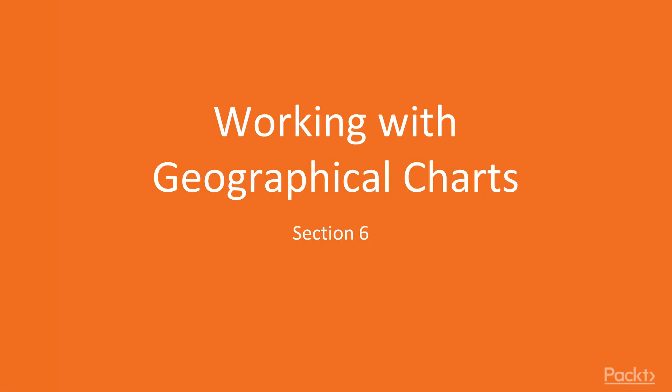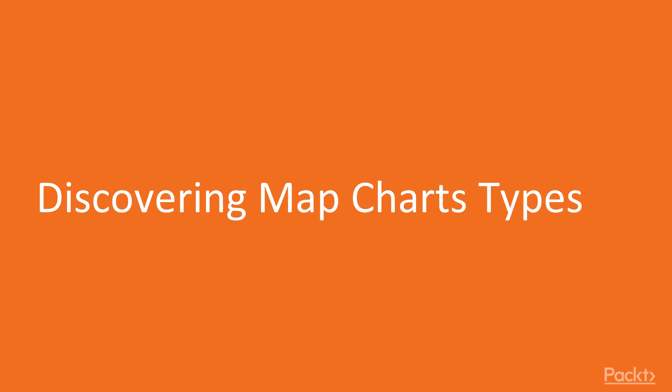Hello and welcome to section 6: working with geographical charts. In this section we are making a tour through the different types of geographical charts and then we are making our own choropleth map using GeoJSON and projections. Typically with a map you have the size or the color of some geographical region, or maybe some points to plot. In this particular video we are going to explore the different types of charts especially for maps.